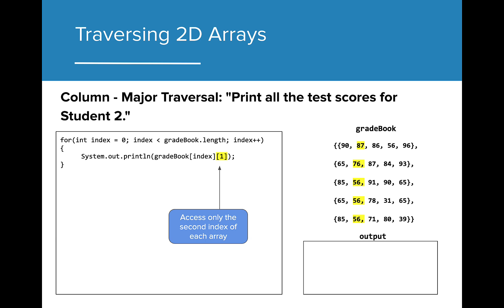Because we only wanted to access data for the second student, the constant that needs to be set is the column index value. This ensures that the value stored at index 1 in each array will be accessed. Now, the for loop will iterate from array at index 0 to the final array in the 2D array, accessing index 1 in each array. After the for loop is completed, the output should reflect all values at index 1 from all arrays in the 2D array.